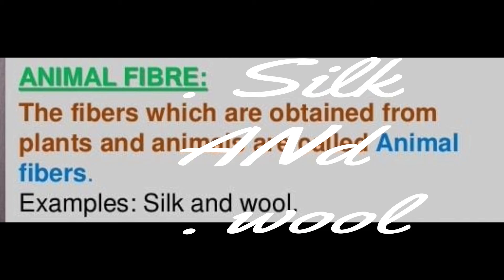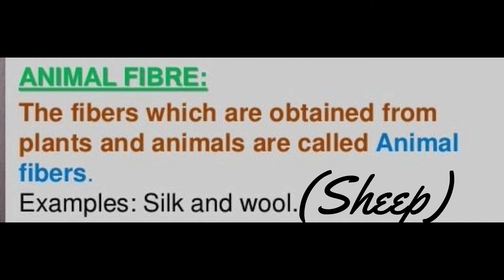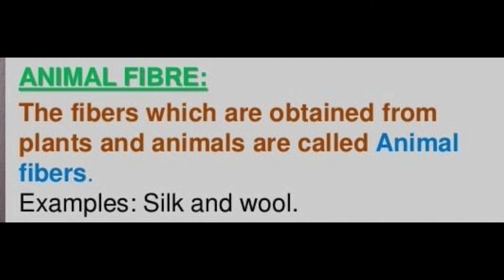In this chapter, we have two fibers to study: silk and wool. Both are obtained from animals. Wool comes mainly from sheep, and in this chapter we also study silk, which comes from the silk moth.